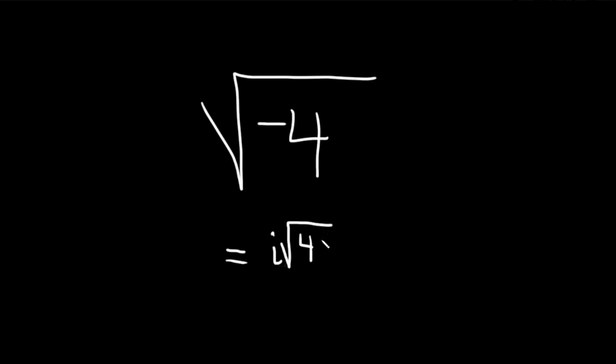And now we just have to figure out the square root of 4. Well, that's pretty easy. That's 2. So this is equal to i times 2. But people don't usually leave their answer like this. They usually put the i at the end. So this is equal to 2i.